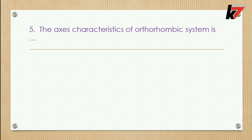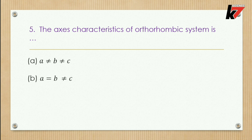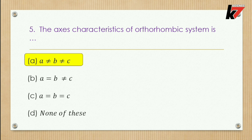Question 5: The axis characteristics of the orthorhombic system — options: a≠b≠c, a=b and ≠c, a=b=c, or none of these. Here a, b, c are the edges. The correct option is the first one: all edges are not equal.